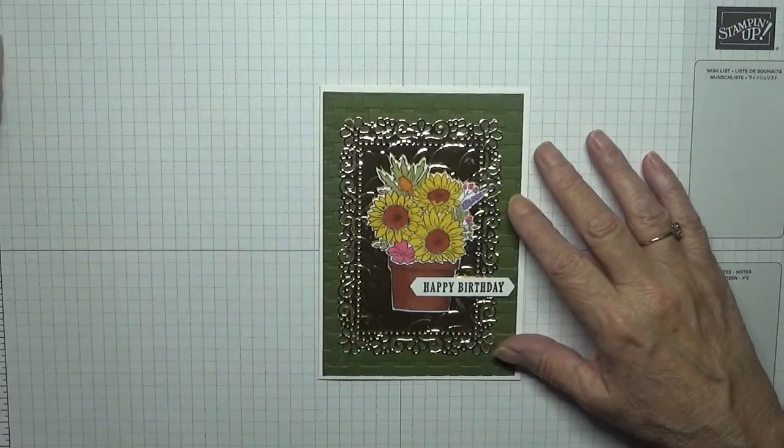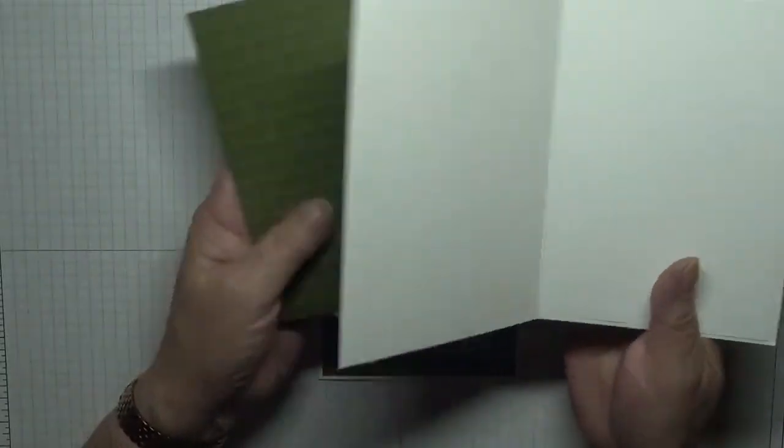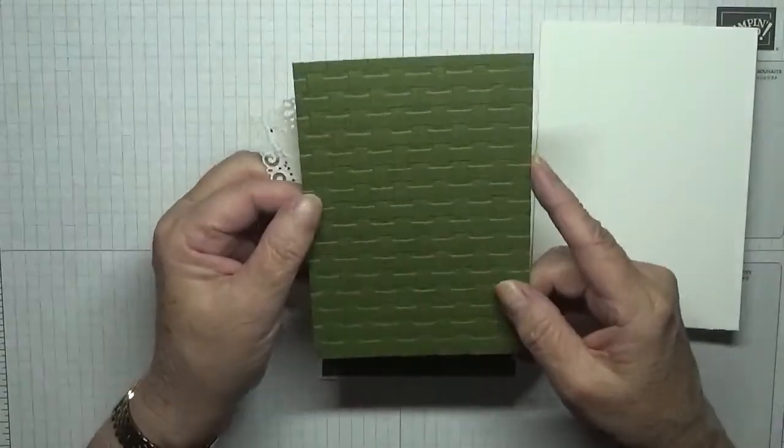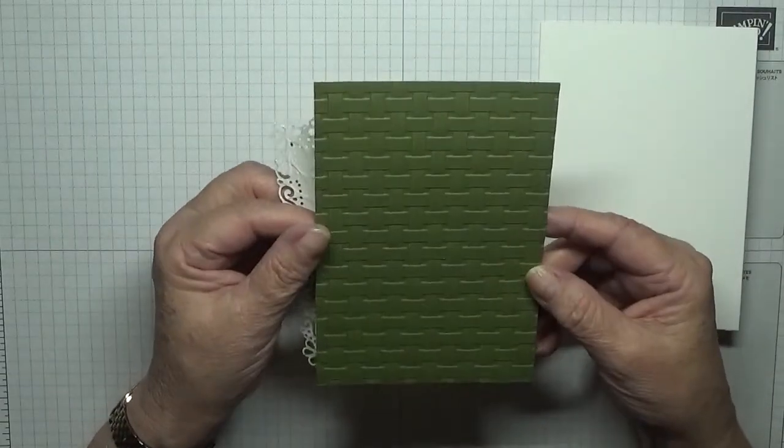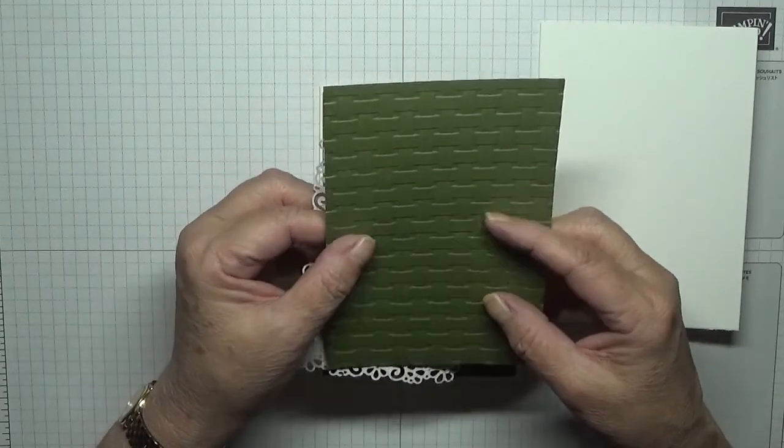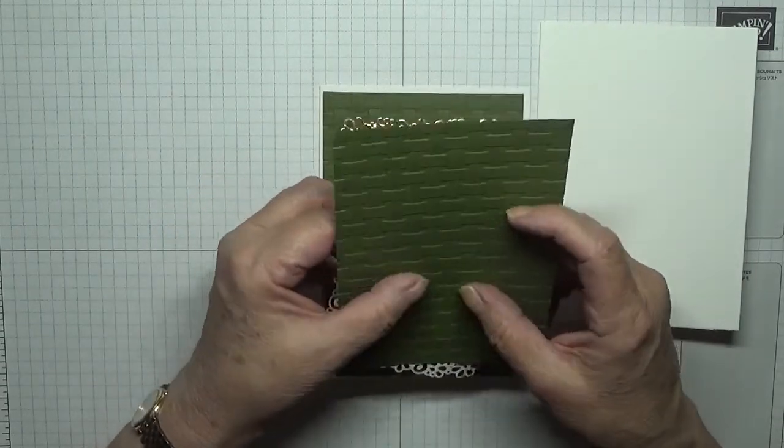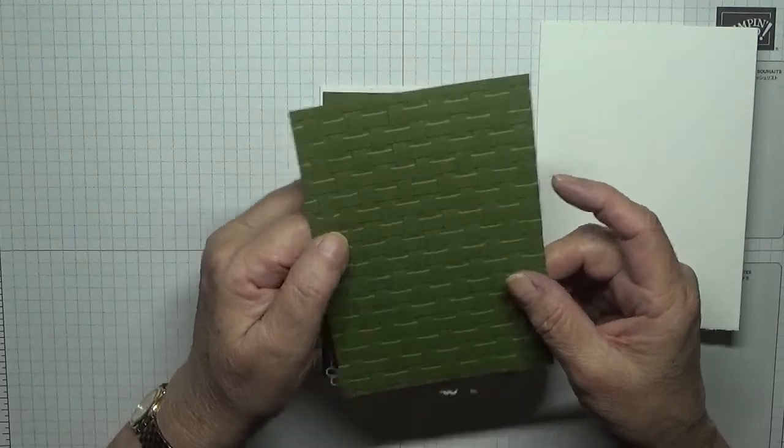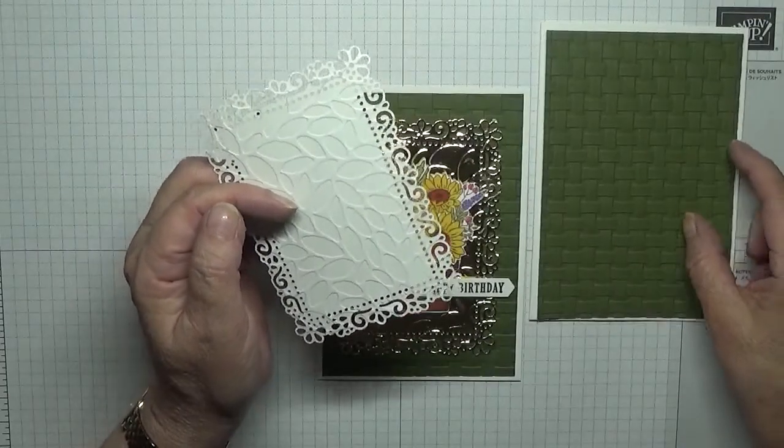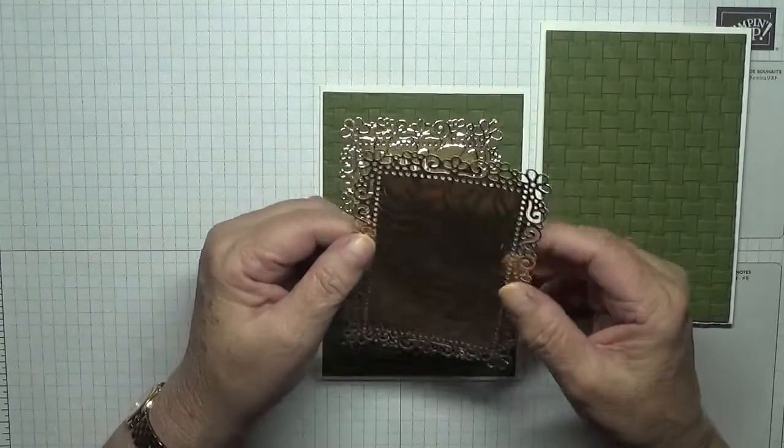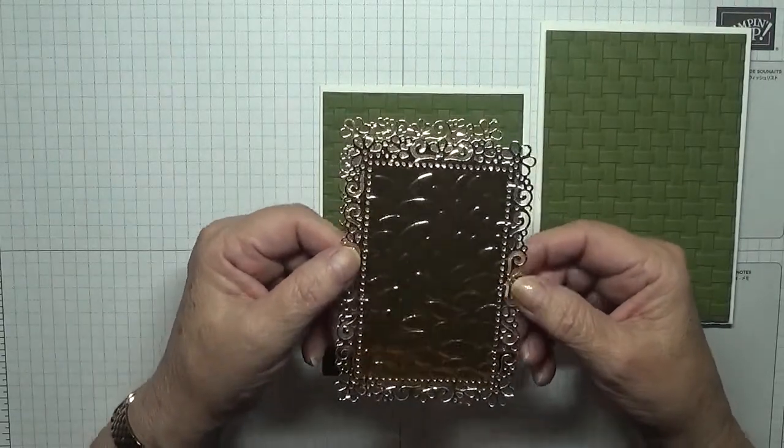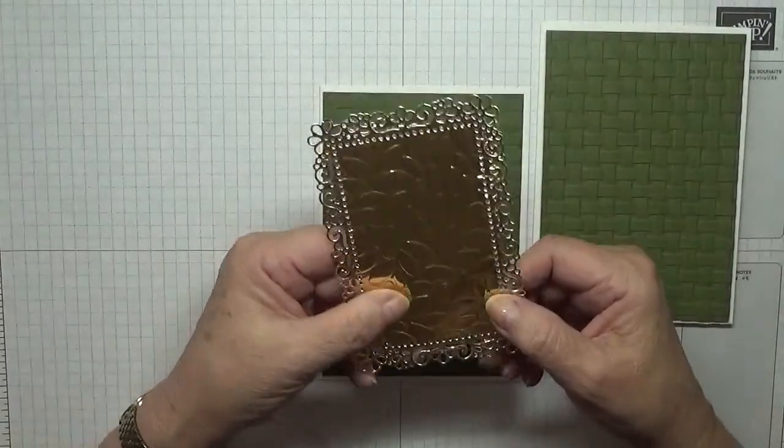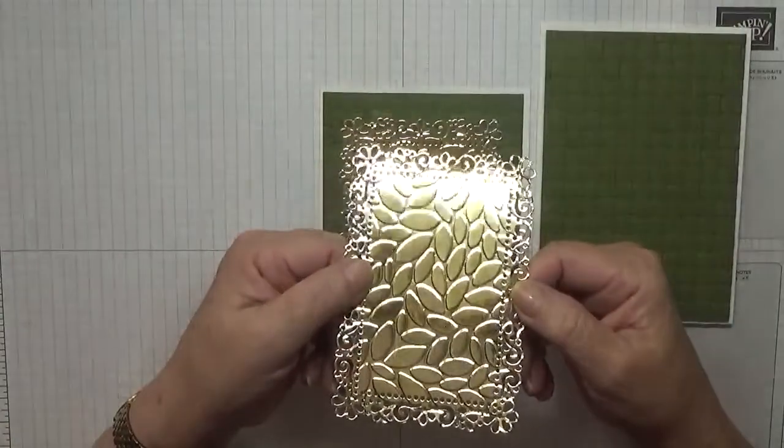To make this card I've got a card base of eight and a quarter by five and seven eighths, scored at four and one eighth, folded in half. I have a piece of Mossy Meadow already run through the embossing folder, the basket weave form. This is five and five eighths by three and seven eighths. I have a piece of foil from the ornate dies, and I've run that through an embossing folder as well, the leaf one, just so it wasn't so plain.